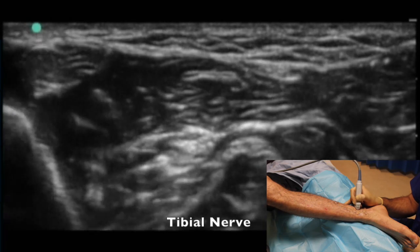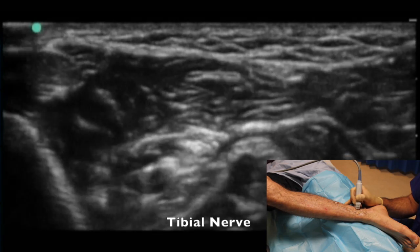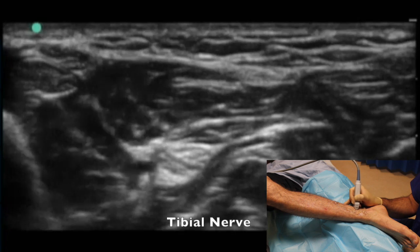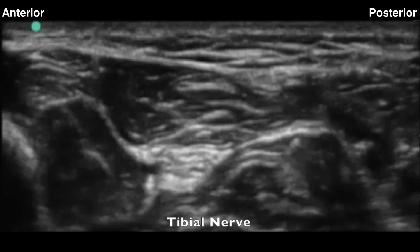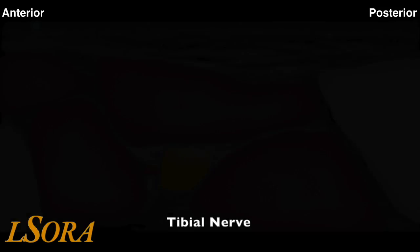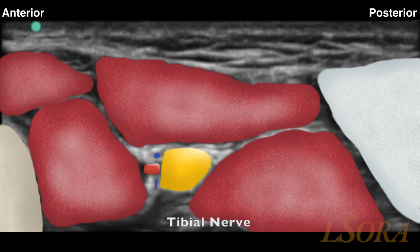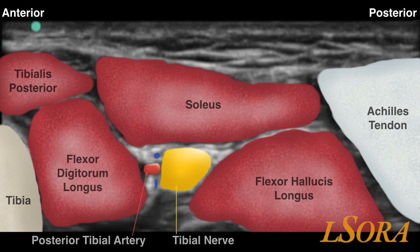We start scanning for the tibial nerve distally and then slide the probe proximally. The left-hand side of the screen is anterior and the right-hand side of the screen is posterior. The anatomical structures are annotated here for ease of identification. Note the tibial nerve in the centre of the screen.